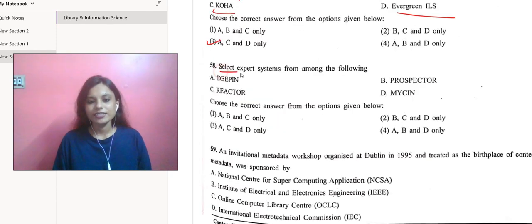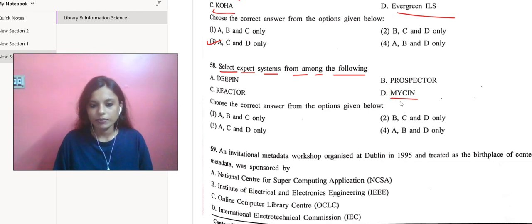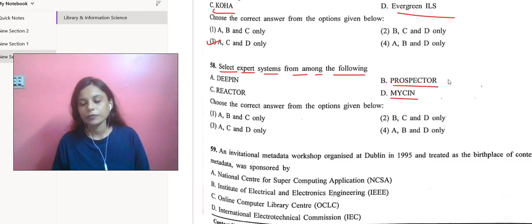The next question is select expert systems from among the following. We can choose MYCIN because MYCIN was an early backward chaining expert system that used artificial intelligence to identify the bacteria causing severe infections.